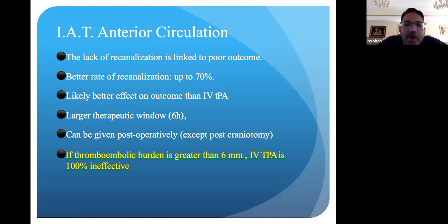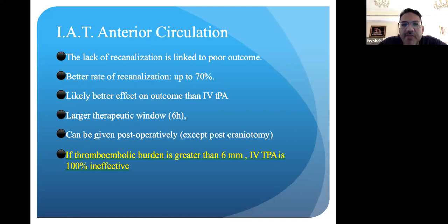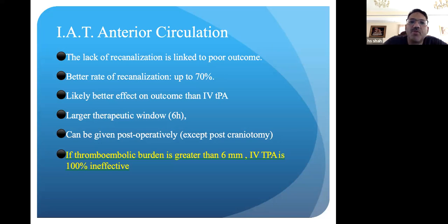The important takeaway from intra-arterial therapy: intravenous therapy is ineffective if the clot is greater than 6 millimeters. If you see on CT angiography that the clot size is bigger than 6 millimeters, giving IV TPA is not effective. The only effective route at that point is going to be intra-arterial.